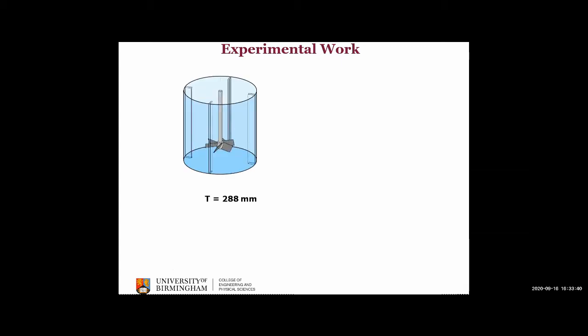Our setup was an agitated tank with a diameter of almost 29 centimeters. The impeller diameter is half of the tank diameter. Off-bottom clearance of the impeller is 25% of the tank diameter, and tank height is equal to the tank diameter. We used single-phase experiments with water as our fluid. We also tried multiphase flow using water and glass beads in different concentrations, and we used three types of impellers. A small positron-emitting labeled particle tracer was used as a flow follower to track the liquid behavior.